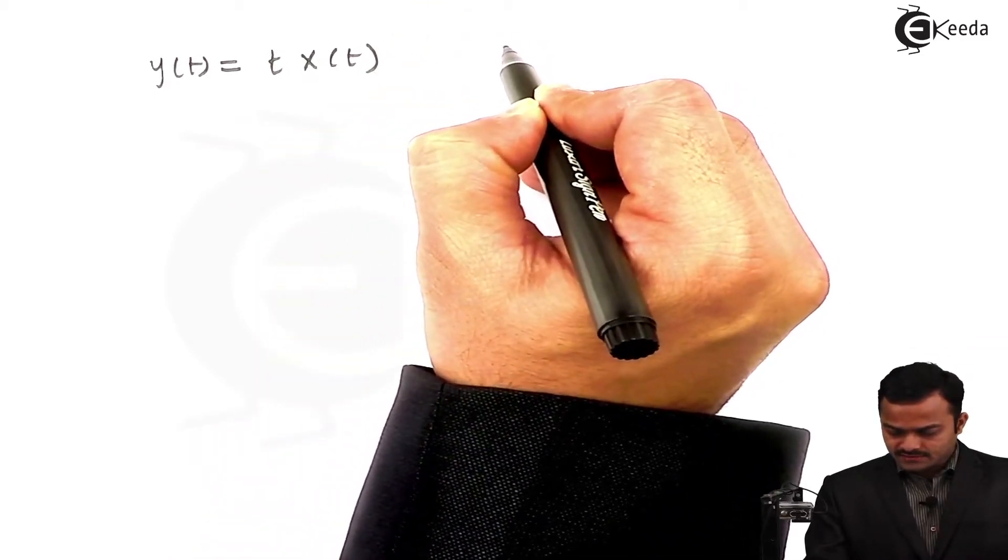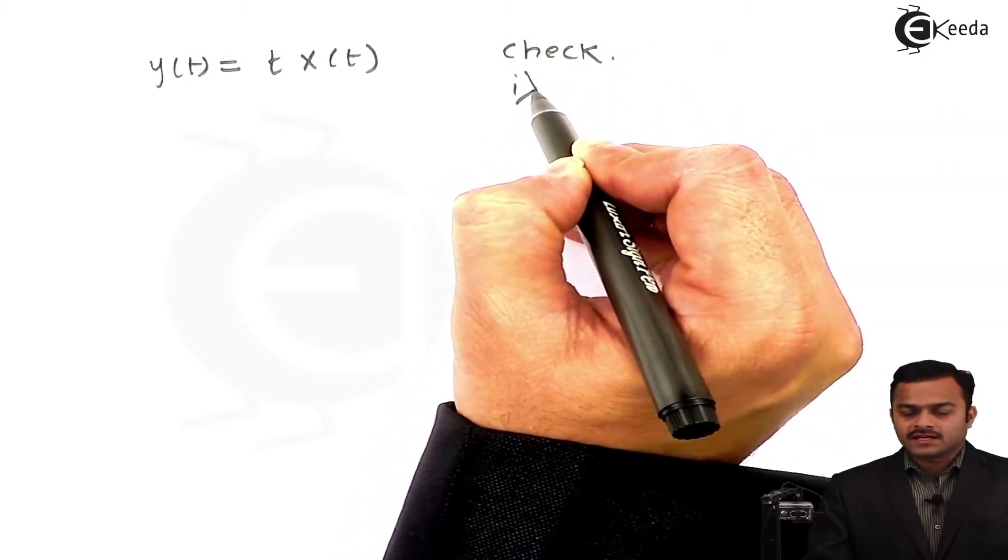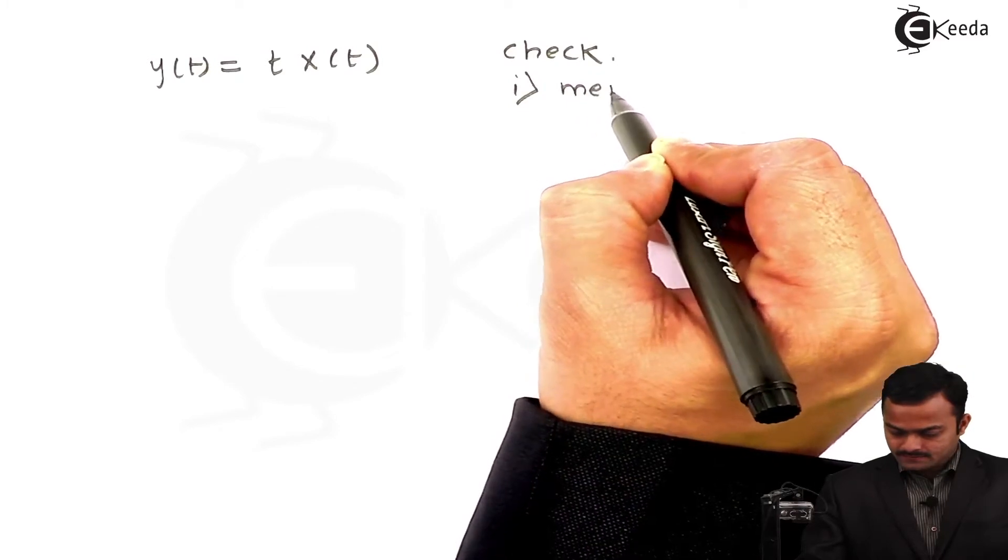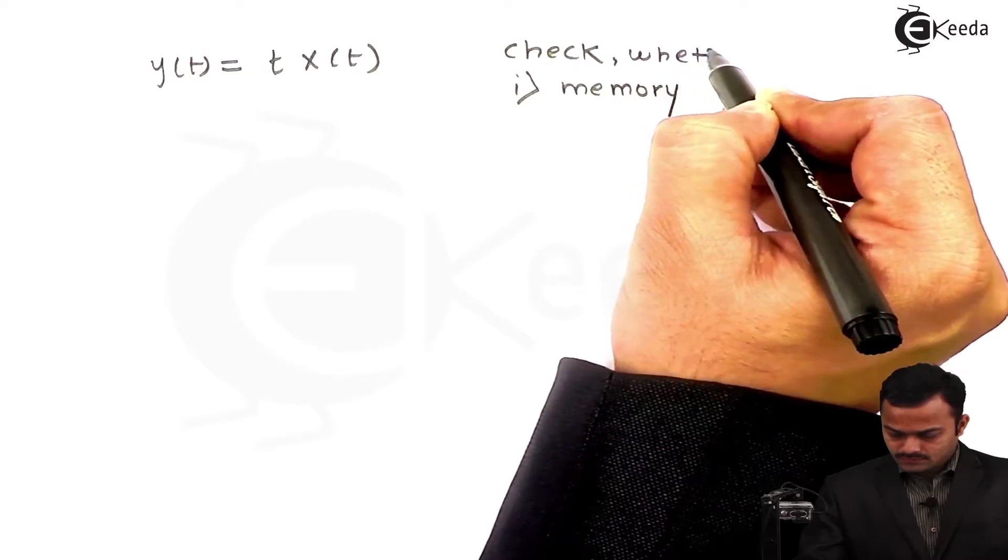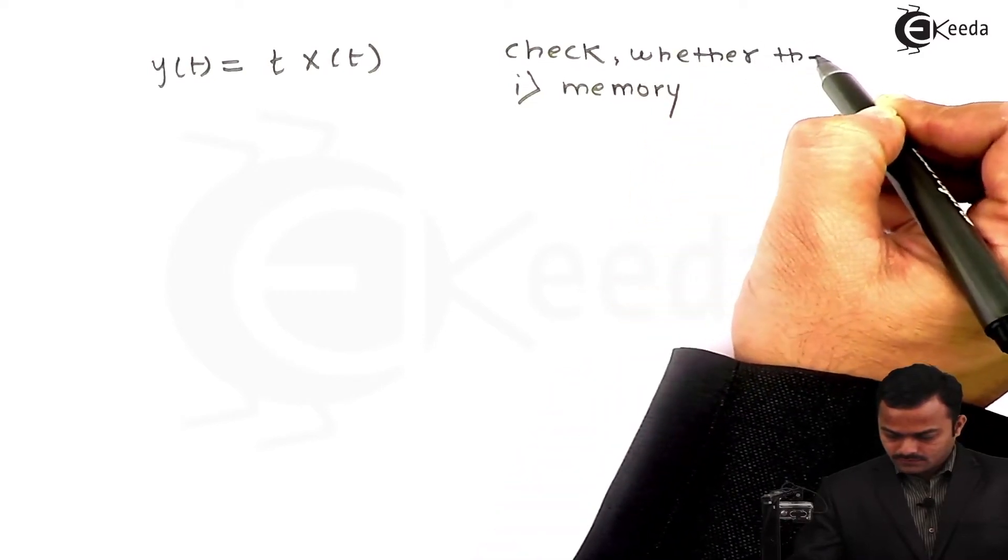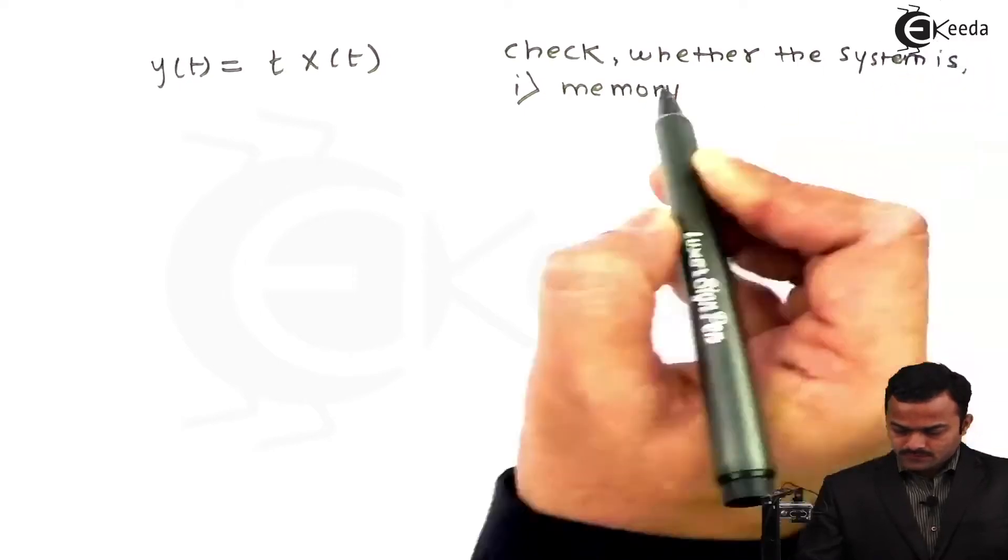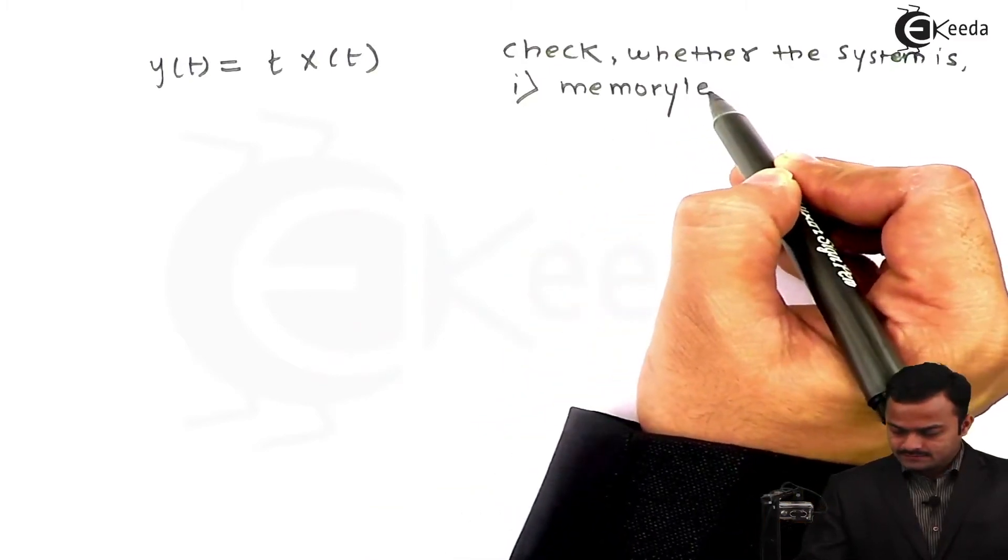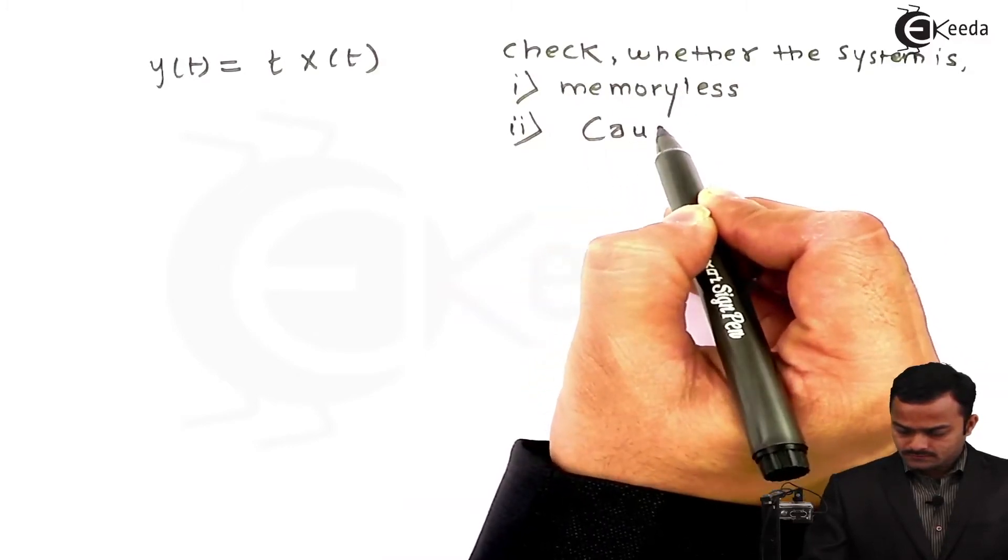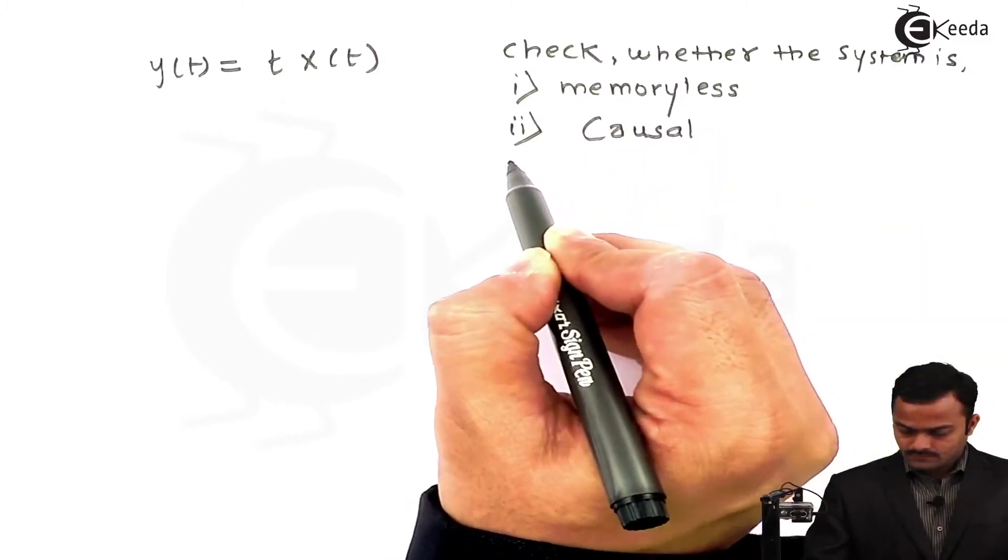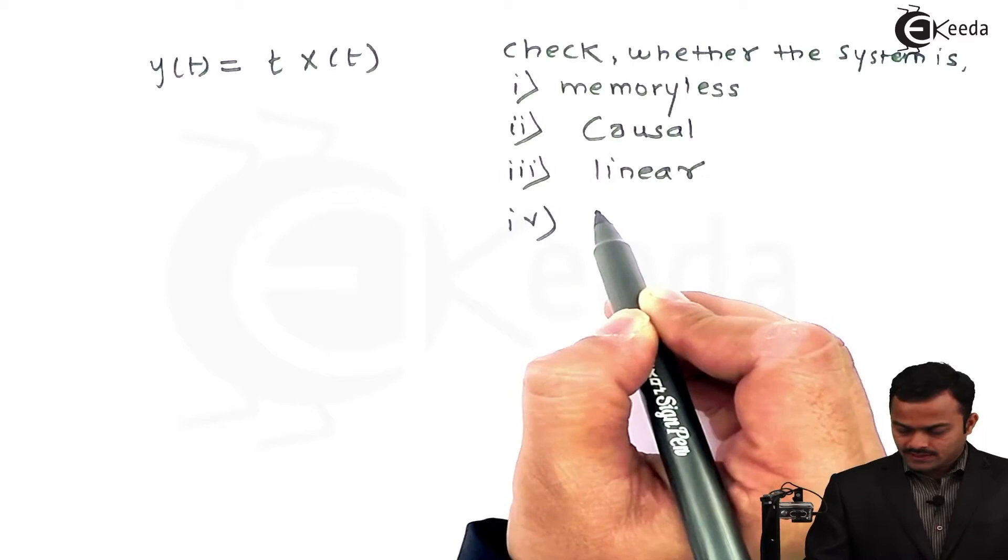For this system we need to check whether it is memoryless, causal, linear, and time invariant.